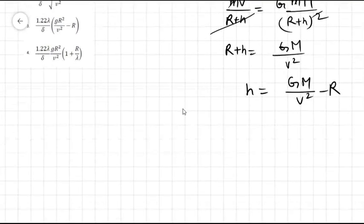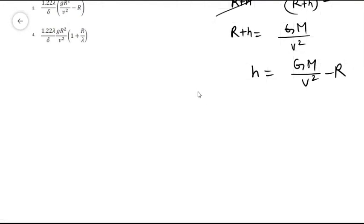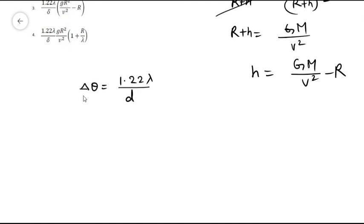To find the minimum diameter we use the Airy formula for a circular aperture, which states that two objects are just resolved when their angular separation delta-theta equals 1.22λ/d, where d is the diameter of the lens and lambda is the wavelength. So d minimum equals 1.22λ/δθ.